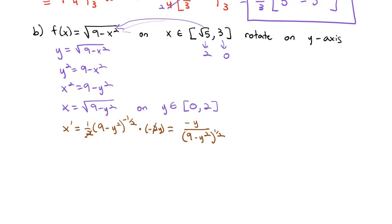To get our y limits, we plug the square root of 5 in for x: 9 minus 5 is 4, square root is 2. Plug 3 in: 9 minus 9 is 0. So we're integrating from 0 to 2. We still need the derivative of our function: x prime equals 1/2 times (9 minus y squared) to the negative 1/2 times the derivative of the inside, which is negative 2y. The 2s divide out, leaving us with negative y over (9 minus y squared) to the 1/2. Now we have the pieces we need.